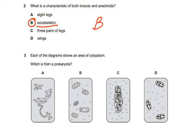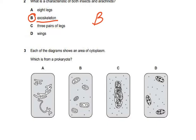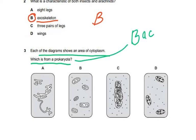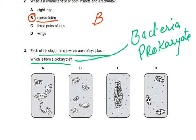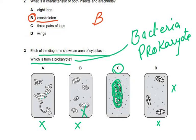Question three: each diagram shows an area of cytoplasm from a prokaryote. Bacteria are prokaryotes. Bacteria do not have mitochondria, rough endoplasmic reticulum, or chloroplasts. They only have nuclear material as a DNA strand not enclosed in a nuclear membrane. The answer is C — that diagram has a chloroplast, which is a membrane-bound organelle bacteria do not have. The others show mitochondria and rough endoplasmic reticulum, also not found in prokaryotes.